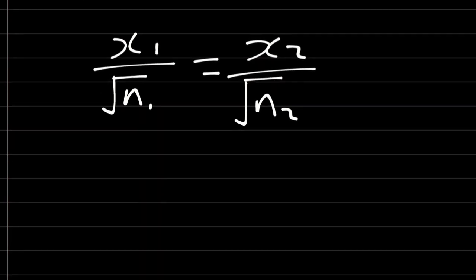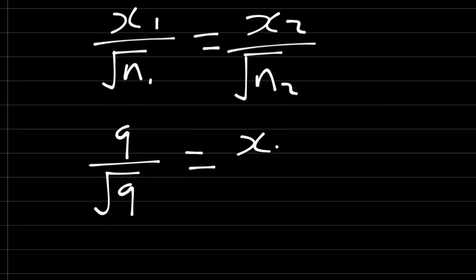Therefore, we have our x1 is 9 over square root of 9 and is equal to x2 over square root of 17 over 9.